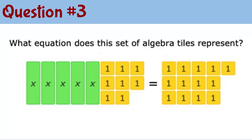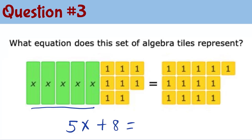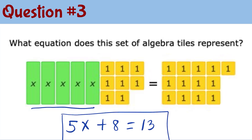Question number 3: what equation does this set of algebra tiles represent? For the left side, we look at the x tiles — we have 5 total, so that is 5x, and we have 8 unit tiles, so that's plus 8. For the right side, we have 3, 6, 9, 12, 13. So the equation for question number 3 will be 5x plus 8 equals 13.